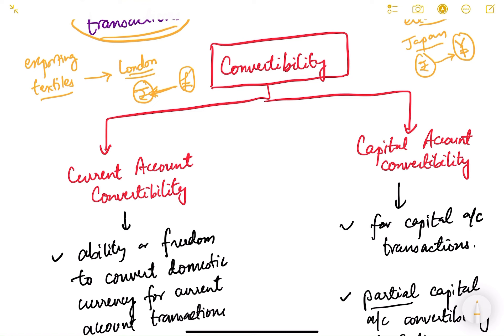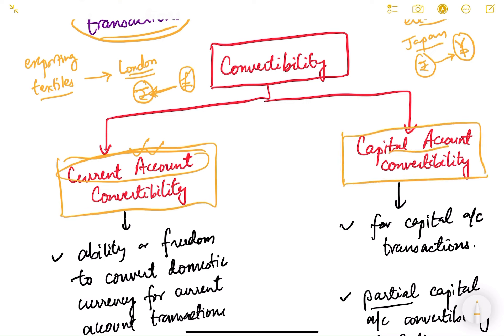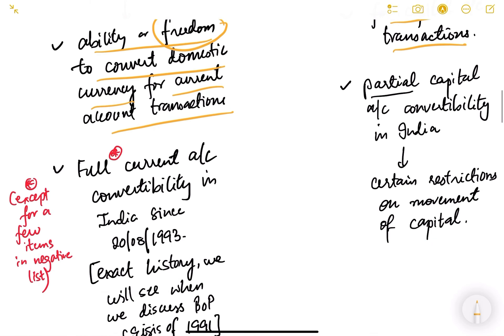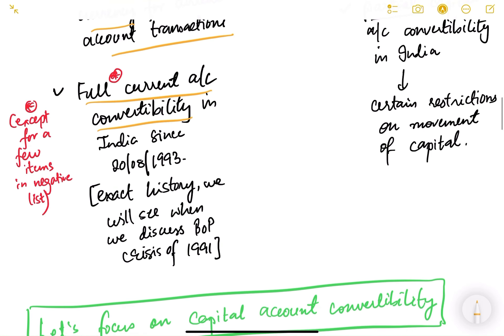Convertibility applies to two accounts. If you are doing conversion of currency from domestic to foreign or foreign to domestic for transactions in the current account, it is known as current account convertibility. If you are doing it for the capital account, it is known as capital account convertibility. Current account convertibility is the ability or freedom to convert domestic currency for current account transactions; capital account convertibility is the ability or freedom to convert currencies for capital account transactions.